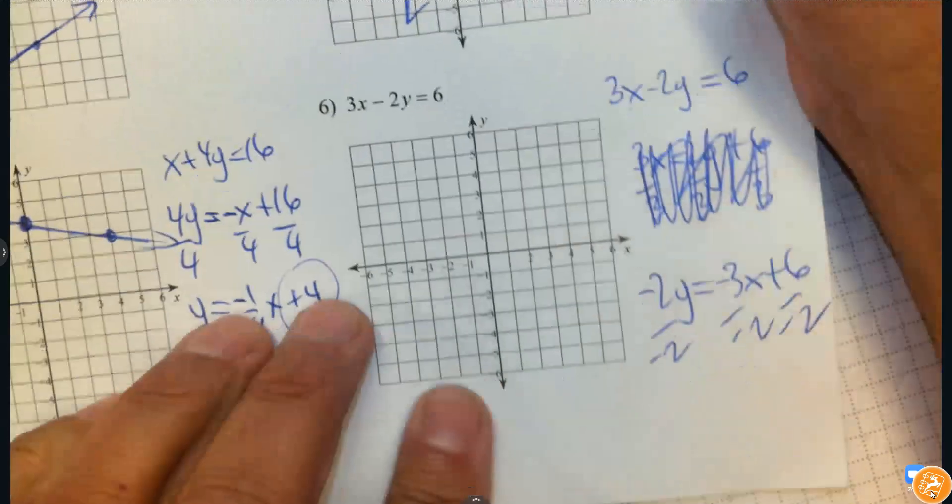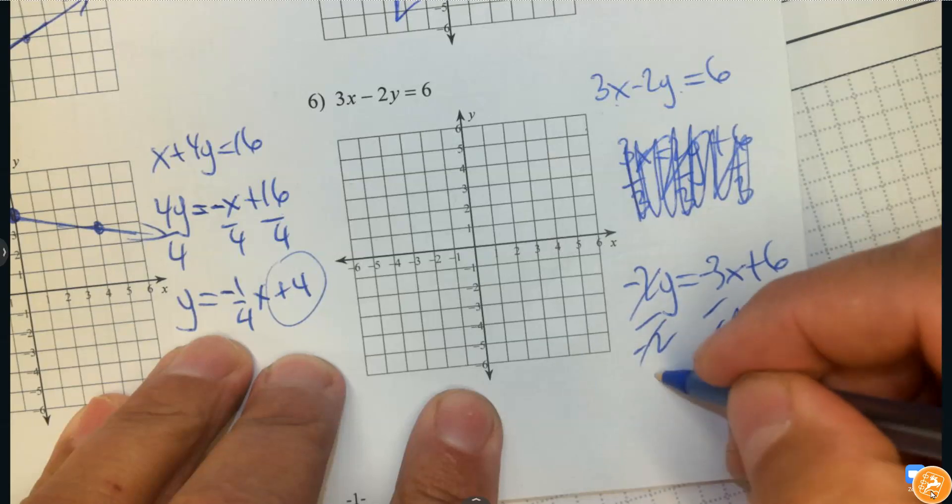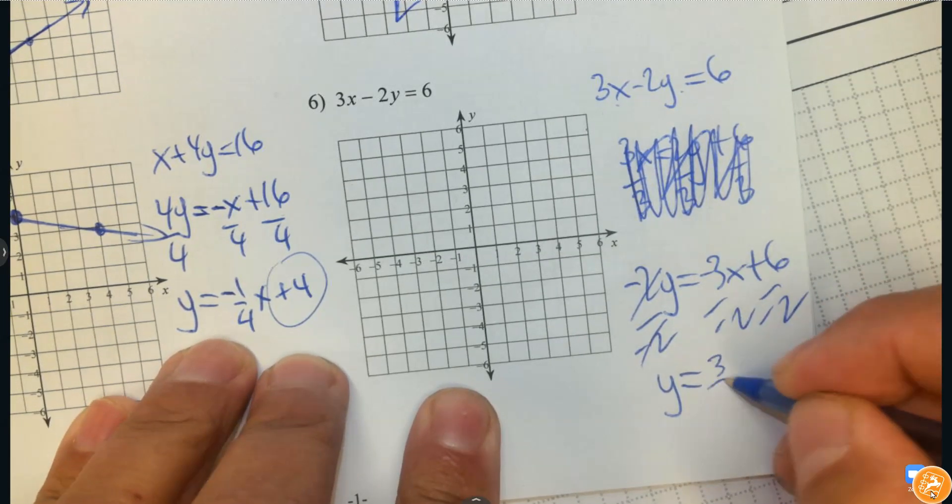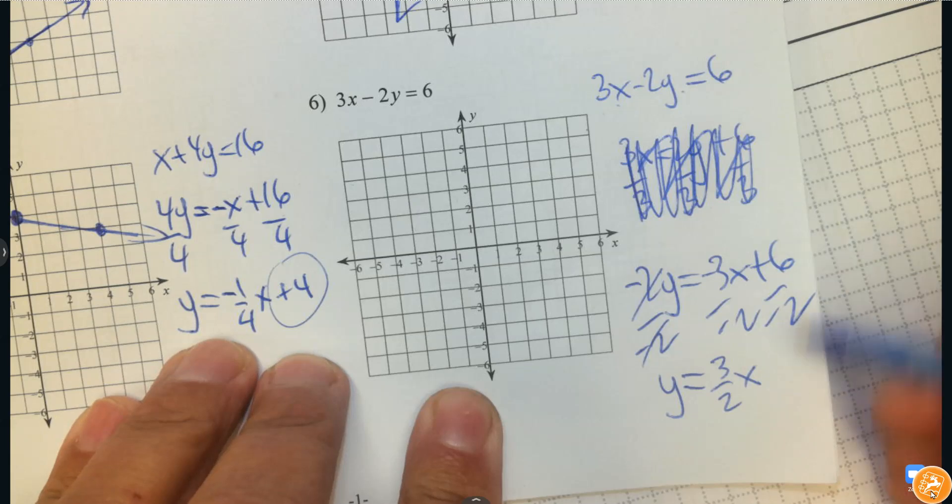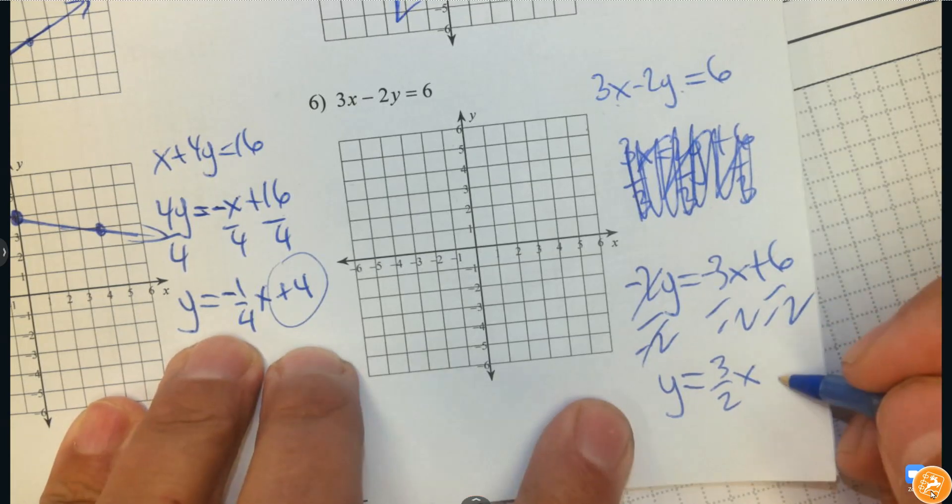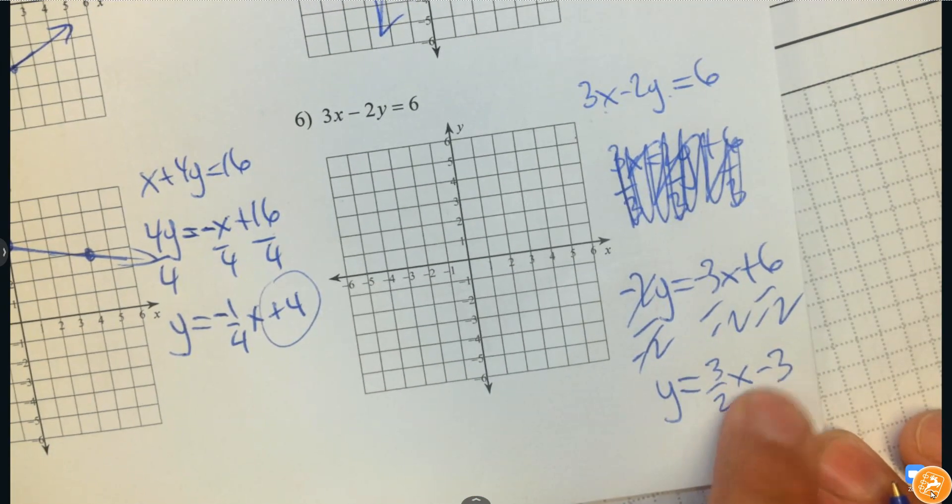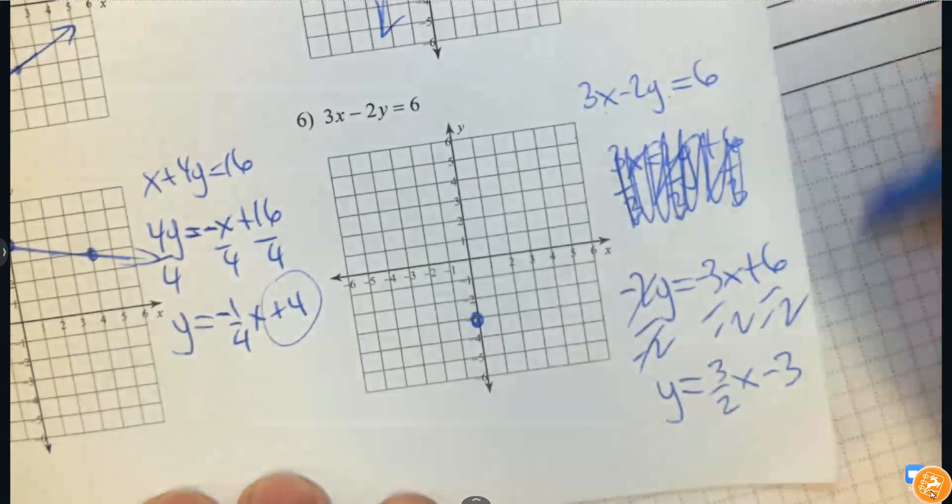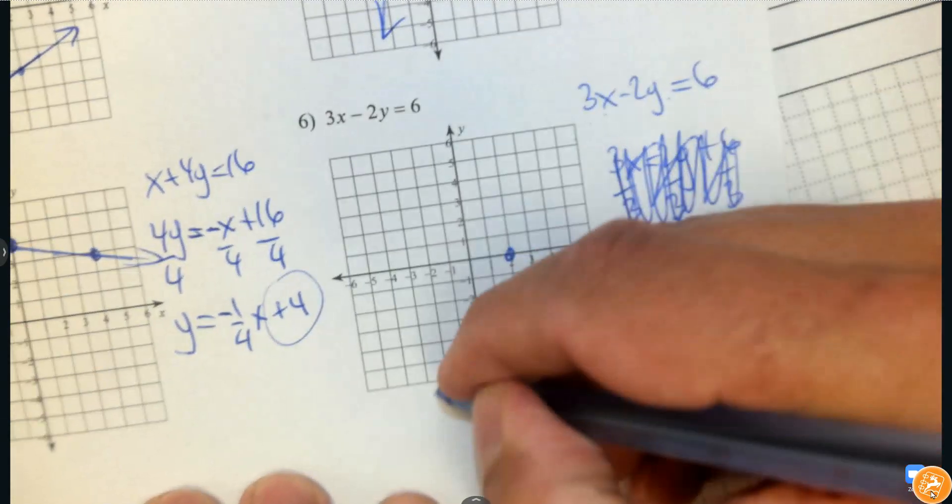And then divide everything by negative 2. Be careful how you simplify this. So we know these divide out. That's just y. And negative divided by negative. It matters that it's positive or negative. It's positive. 6 divided by negative 2. And now it's in the right form. So the y-intercept is at negative 3. And then we're going to go up 3 and to the right 2. And then draw my line.